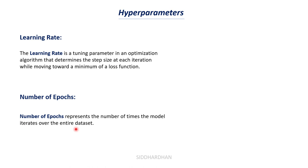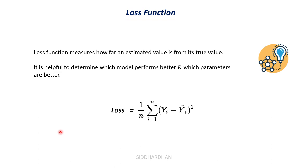Loss function measures how far an estimated value is from its true value — where the estimated value is the value predicted by your model. This is helpful to determine which model performs better and which parameters are better. We use the loss function to understand for which model parameters our model gives better results. The difference between loss function and cost function: when you find the difference for a single data point it's called loss function; when you take a summation it's called cost function.